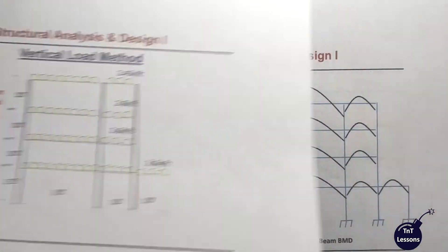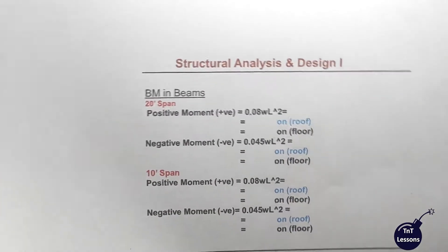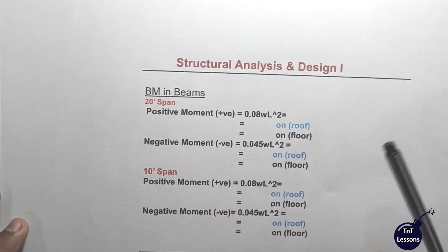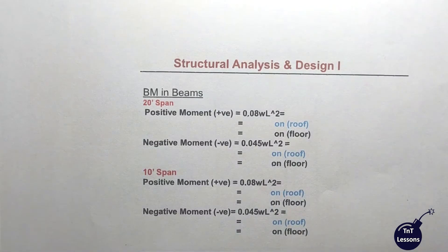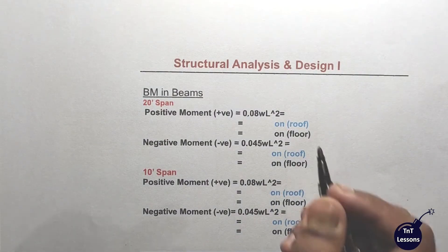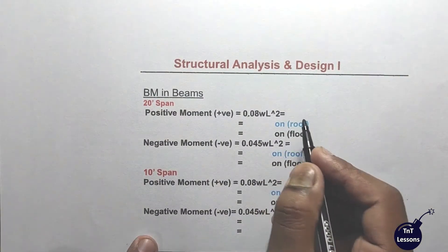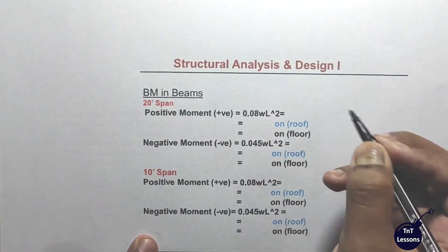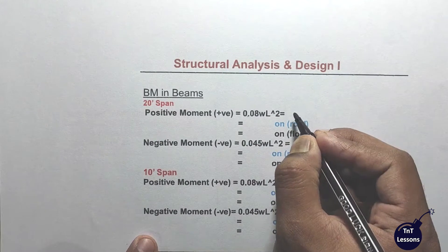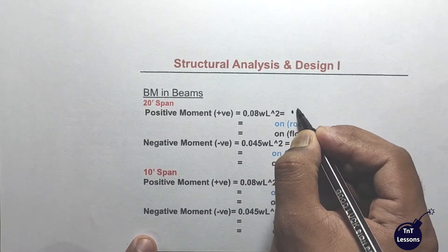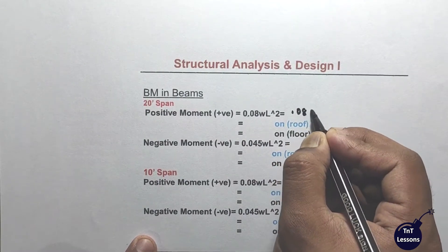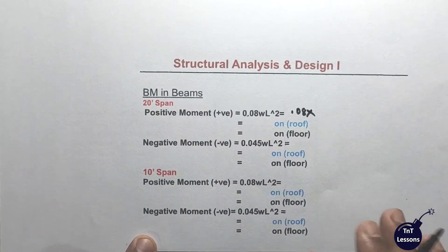So what happens? We need to solve for the 20-foot span. The formula is 0.08 WL squared. That means, what is the value of W?